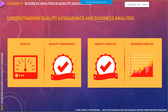Now let's understand the BA and QA hierarchy in a particular project. What's the difference between quality and quality assurance? Quality can be the characteristics of a particular product or software.